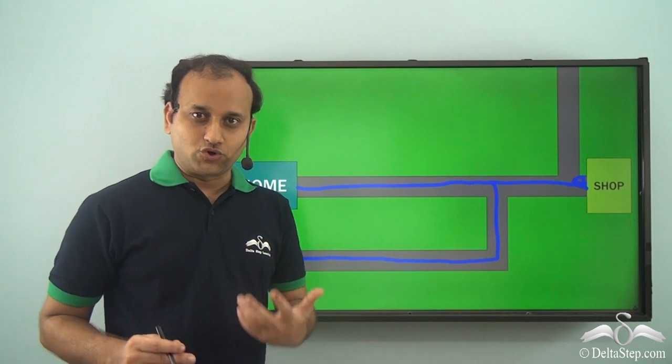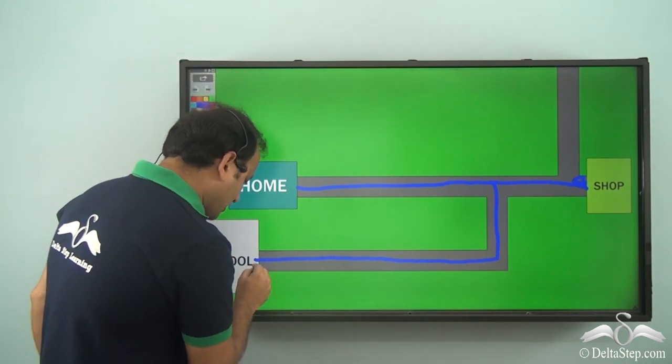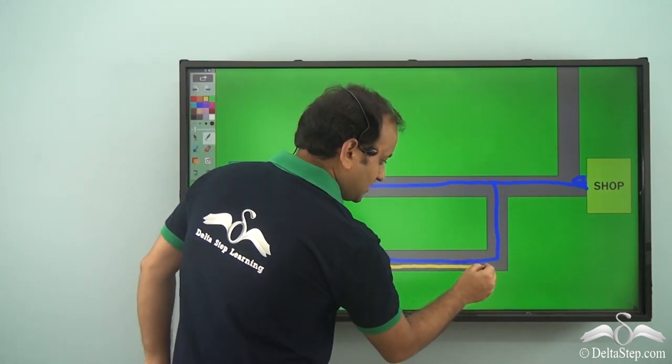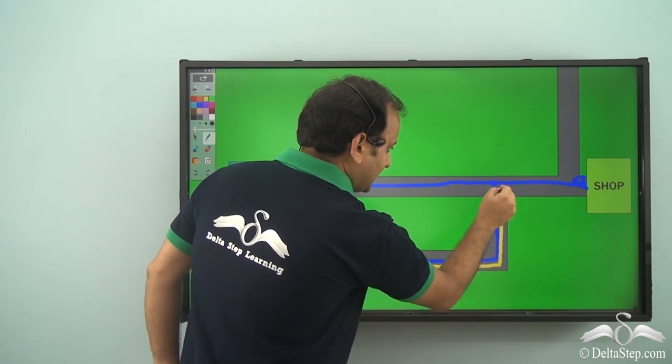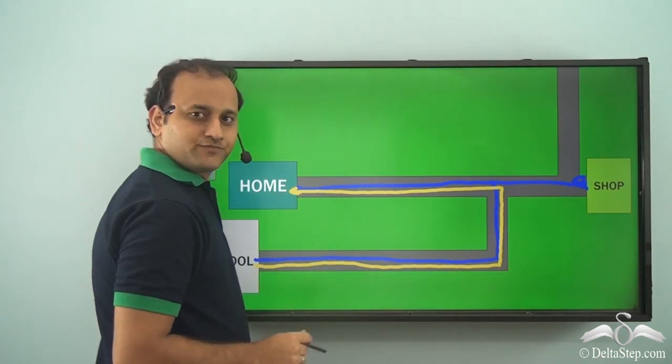So he feeds directions into the robot which is something like this. The robot starts from the school, goes straight, and here it takes a left and then again it takes a left and reaches home. So that was the first task of the robot.